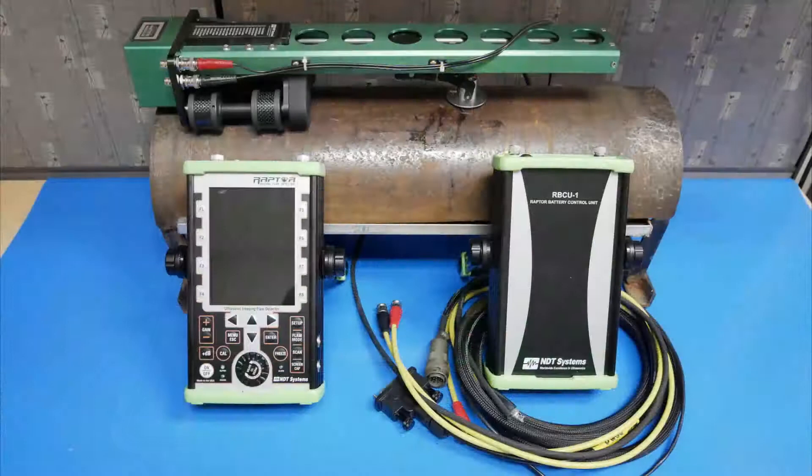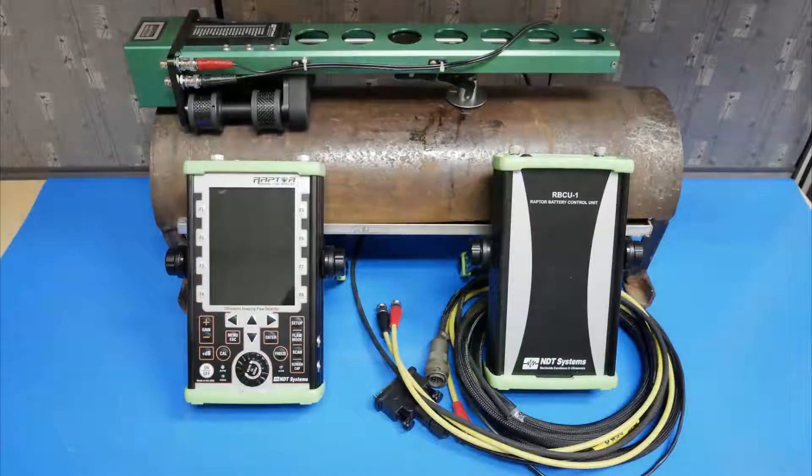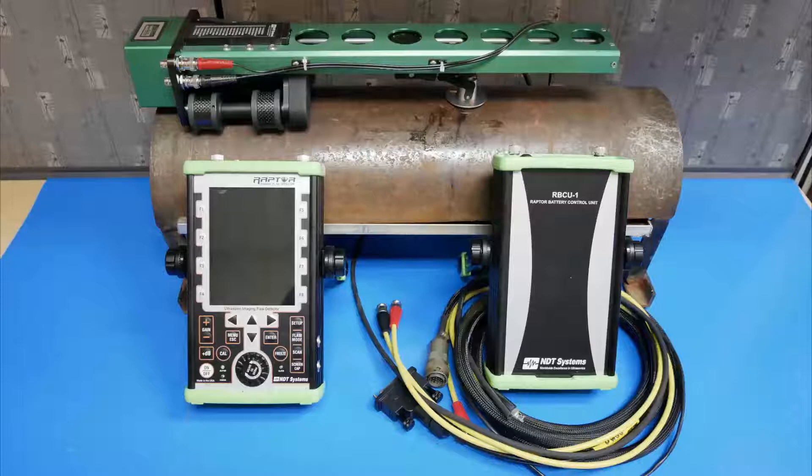Shown here with our RCA scanner, the Raptor is the backbone of the corrosion inspection system, or CIS. In this video, we are going to focus on the CIS's features.